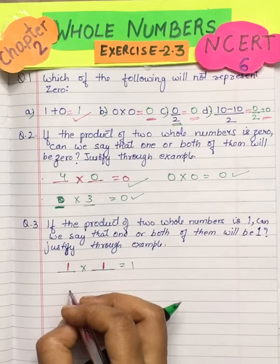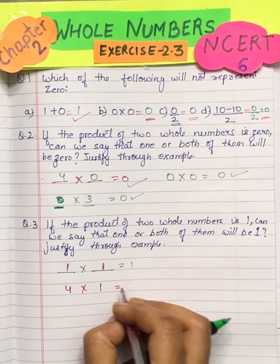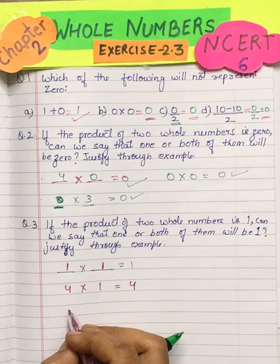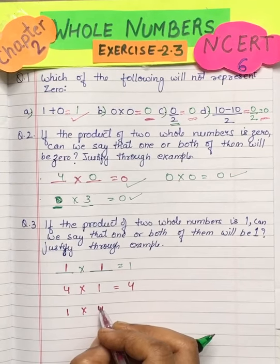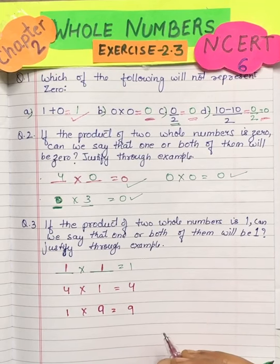But suppose I say that one of them is 4 and then I multiply by 1, then what do I get? 4 ones are 4. And now suppose if 1 is here and any other number, let's say 9, then 1 nines are again 9.